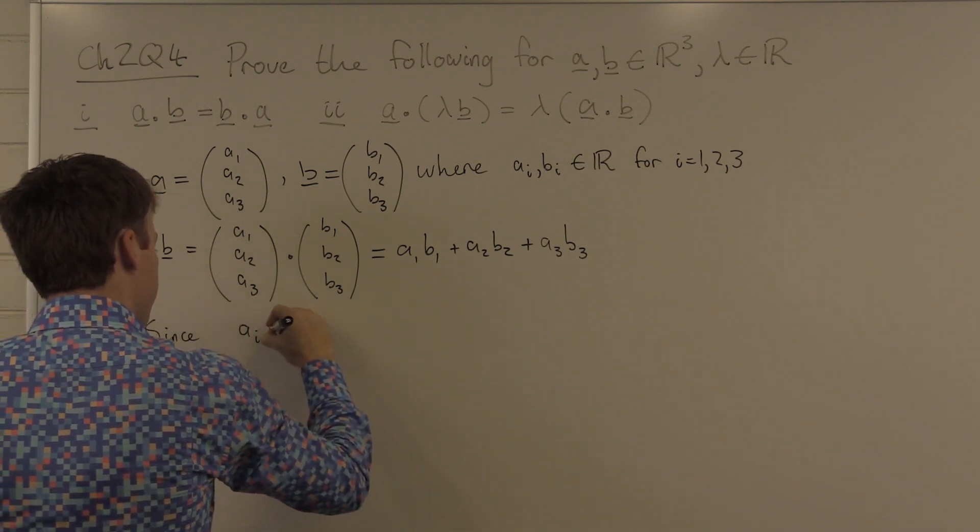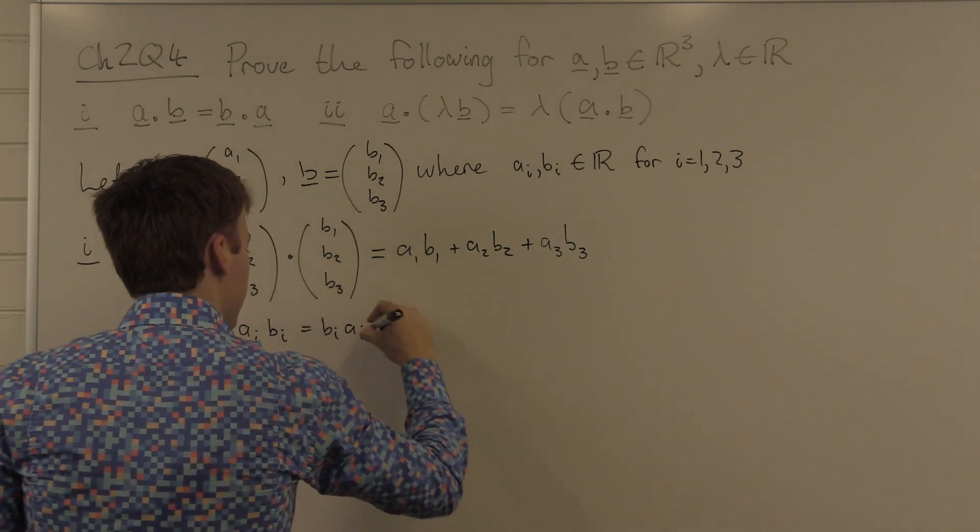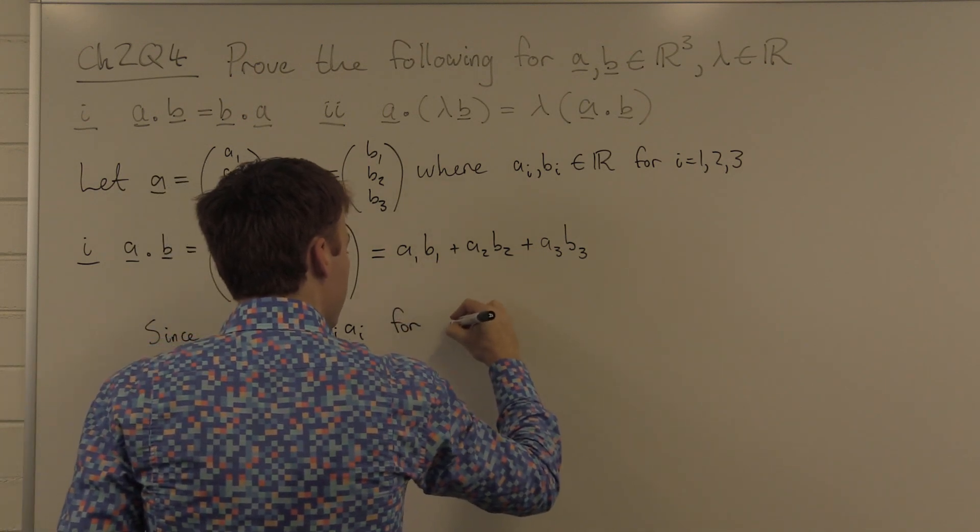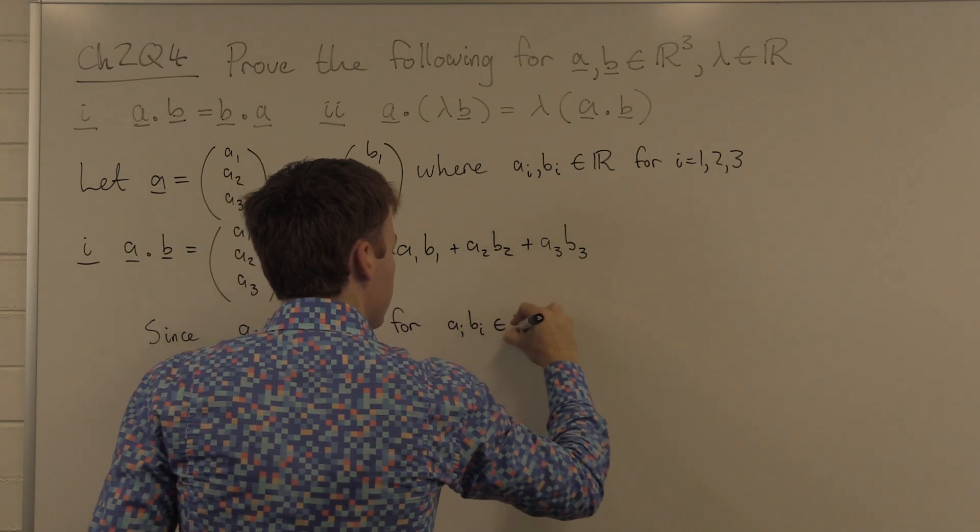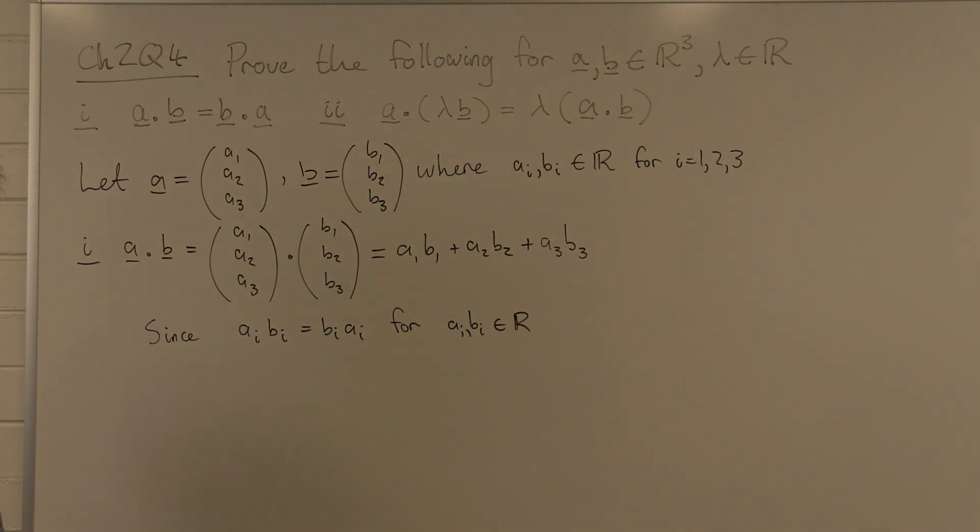Since A_i B_i equals B_i A_i for both A_i and B_i are real numbers, otherwise known as commutativity.